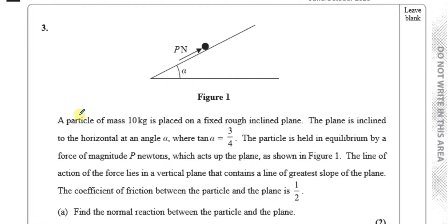It's got a particle of mass 10 kilograms placed on a fixed, rough, inclined plane, so we know we're going to have to deal with friction. The plane is inclined to the horizontal at an angle alpha, where tan of alpha is 3 over 4. The particle is held in equilibrium by a force of magnitude P newtons, which acts up the plane as shown in figure 1. The coefficient of friction between the particle and the plane is 1 over 2.